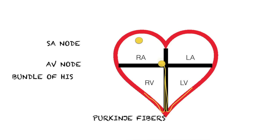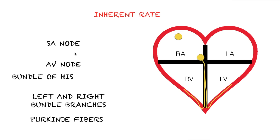Another concept we need to discuss is the inherent rate of these cardiac cells. Inherent rates are the heart rates generated depending on which cardiac cells sense an impulse. For example, if the SA node starts it all and it goes all the way to the Purkinje fibers, this will generate a heart rate of 60 to 100 beats per minute.